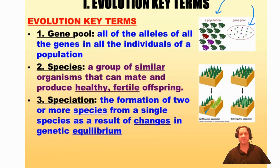Our next term is species — a group of similar organisms that can mate and produce healthy, fertile offspring, or more precisely, organisms that share the same gene pool. For example, in the image of the population of frogs, there were green, purple, and red frogs. Since they are all members of the same species, they are all able to mate and produce healthy, fertile offspring, thereby incorporating their genes into the gene pool.